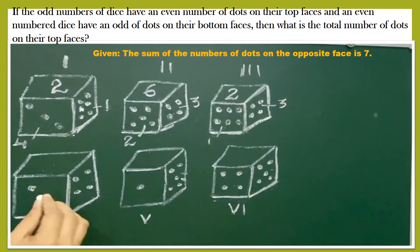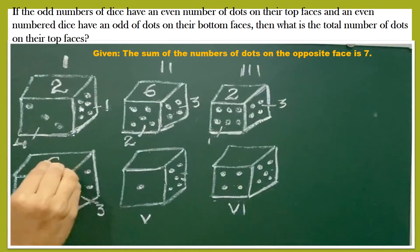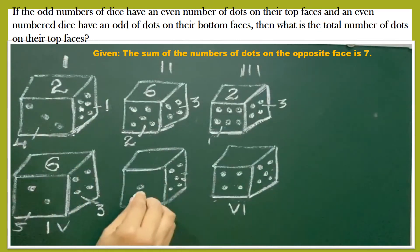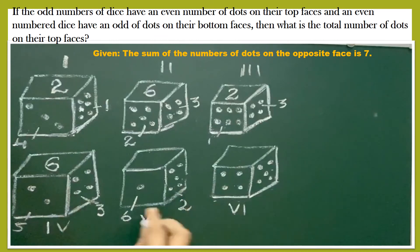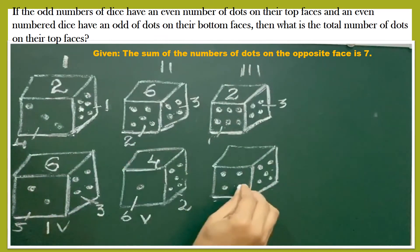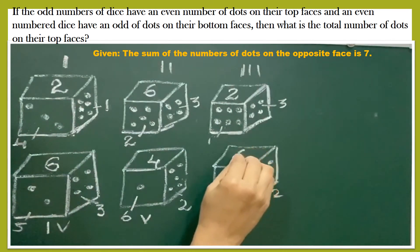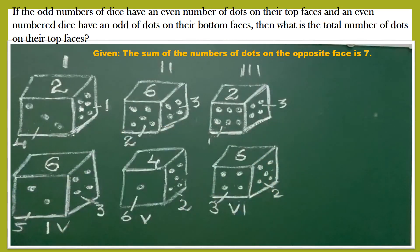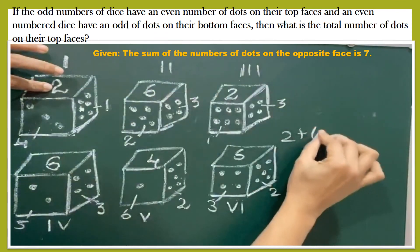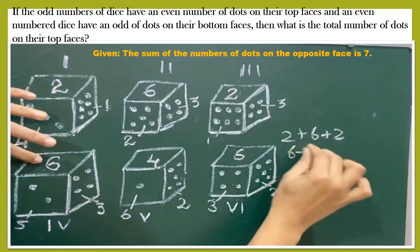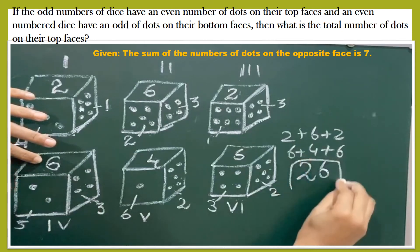For die 5: 1's opposite is 6, 5's opposite is 2, remaining is 3 and 4; even number is 4. For die 6: 4's opposite is 3, 5's opposite is 2, remaining is 1 and 6; even number is 6. Now let's take all the dots at the top face and add them: 2 plus 6 plus 2 plus 6 plus 4 plus 6 equals a total of 26 dots on the top face.